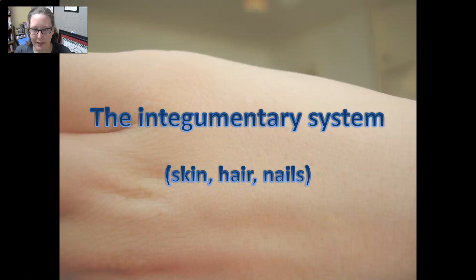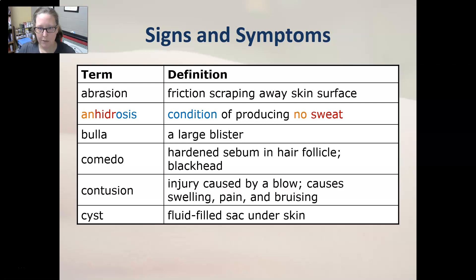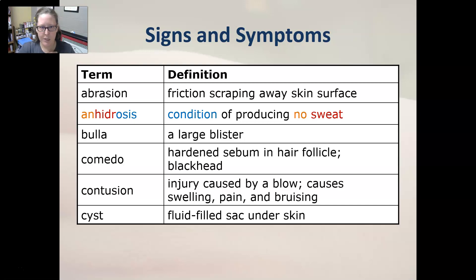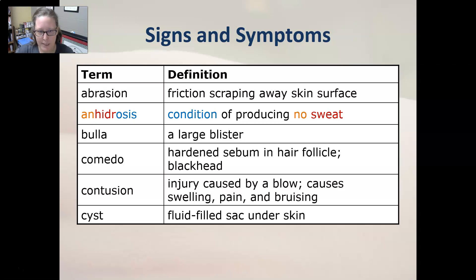Hi everyone, this is Dr. A with medical terminology of the integumentary system, and we're going to go over the signs and symptoms. Let's start with abrasion — it's a friction scraping away of the skin surface, like rug burn or road rash. Anhydrosis is a condition of producing no sweat: 'an' means no, 'hydro' means sweat, so no sweat.